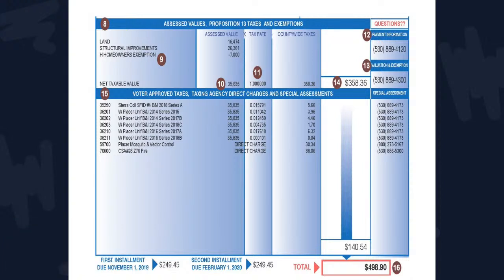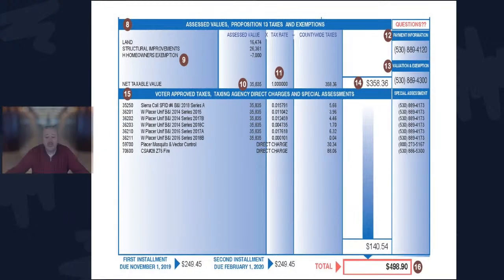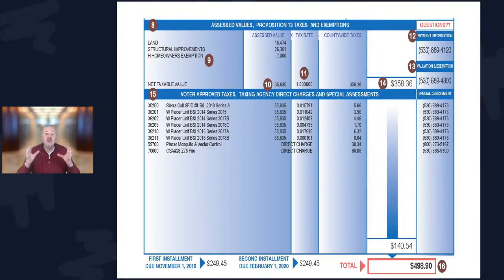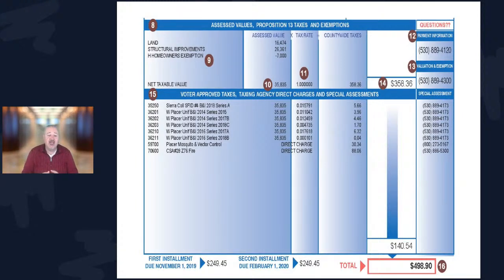The middle section is the critical part. Section eight in the top left corner shows how the home value is broken out: the county's opinion of what the land is worth, what the structural improvements are worth, minus your homeowner's exemption — which comes out to spot number ten, your net taxable value. Your net taxable value is the amount your property taxes are based on. The number before the homeowner's exemption is what you compare when you think the county is off on your home value.